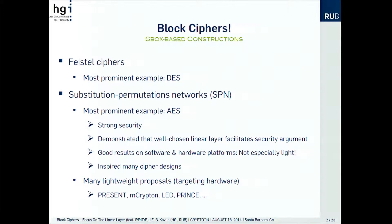With S-box-based constructions, we have two different strategies. One is Feistel — the most prominent example is DES — but we will focus on substitution-permutation networks. The most prominent example is AES, which has very strong security. It demonstrated that a well-chosen linear layer is not just good for efficiency or security, but it also facilitates arguments for the security. It had some good results on software and hardware platforms, but not especially light for resource-constrained devices. But it inspired many cipher designs, so we also had some lightweight proposals — most of them targeting hardware — like PRESENT, KLEIN, and LED.